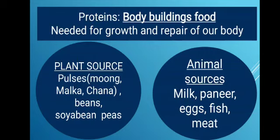Pulse sources of protein include moong dal, malka, chana dal, beans, soya beans, peas — all are sources of protein. For animal protein we have milk, paneer, egg, fish, and meat. From all these items we get protein.